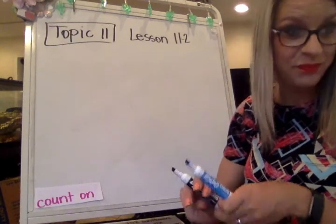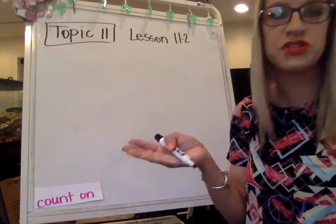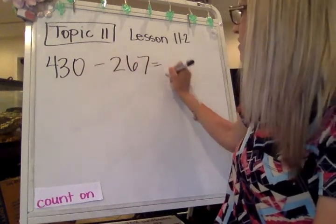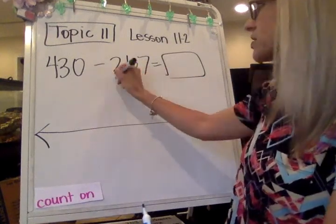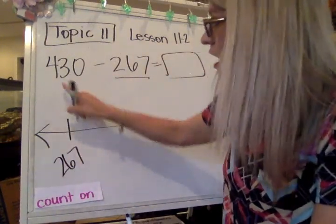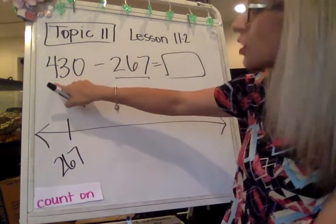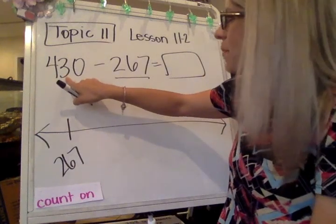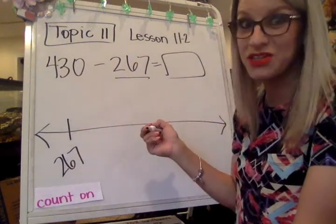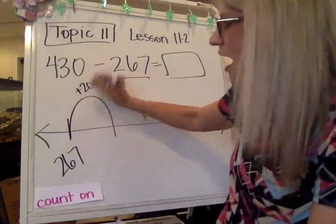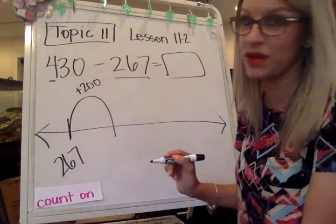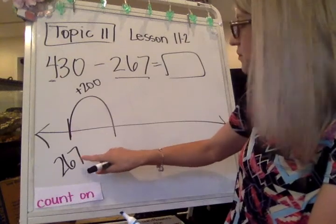All right, we're going to use counting on again. 430 minus 267 equals something. We're using our open number line. We're going to start with this 267, and then we're going to add up until we get to 430. Now if I add two hundreds, it's going to get me closer to that 400 spot. I don't want to add too much. If I added three hundreds, then it would bring me to 567, and that would be way too much. So I'm only adding two hundreds. You can choose to add 100 at a time if that's more comfortable for you. You should be at a point where you're able to notice that this needs to get all the way to the four hundreds place, and you should be able to add that 200 no problem.